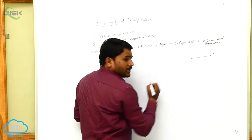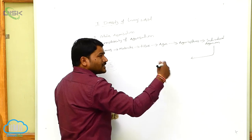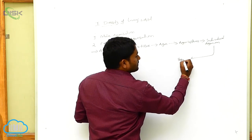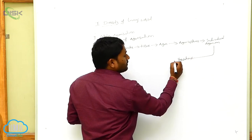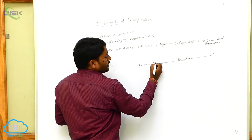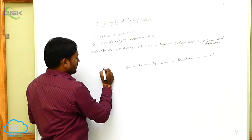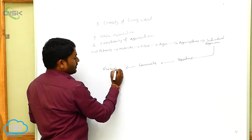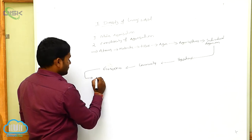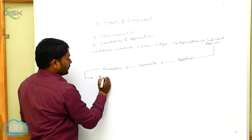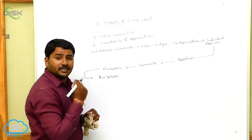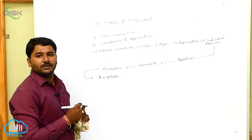A group of different organisms is called a population. Few populations form a community. These communities form an ecosystem. The ecosystem, for example, forms the biosphere. So this is the complexity of organization.